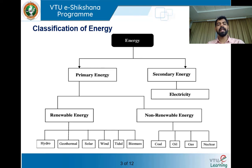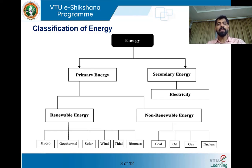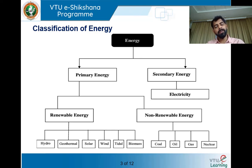Primary energy is further classified into renewable energy and non-renewable energy. These are the present terminologies. Earlier, renewable energy was known as non-conventional energy sources, and non-renewable energy was known as conventional sources. Conventional means we have been following a certain tradition that our ancestors were following — they were using coal, we are using it; they were using wood, we were using it. We don't have any control on its production; we just take it out as it exists from the Earth.